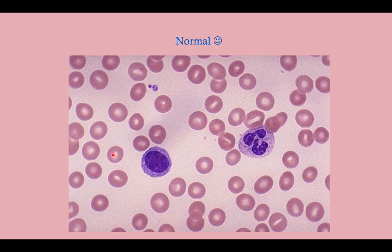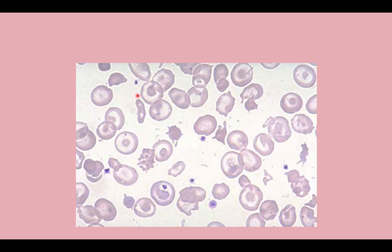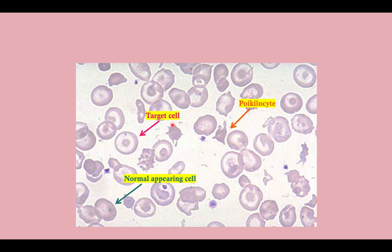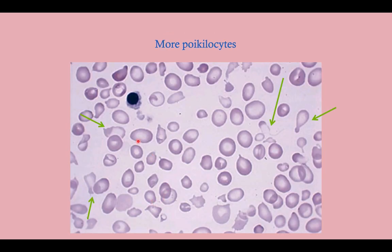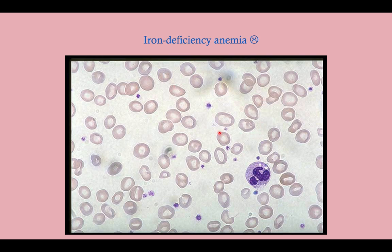Looking at blood smears: on a normal smear, you see a neutrophil and red blood cells with a modest area of central pallor. In thalassemia, you can see target cells and poikilocytes — poikilocytes being teardrop-shaped cells. In iron deficiency anemia, the area of central pallor is enlarged; you'll see some normal cells alongside very pale-looking cells.